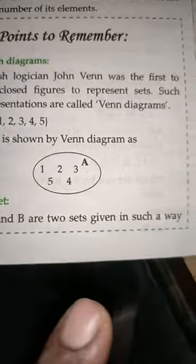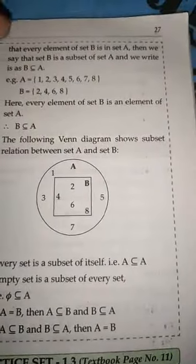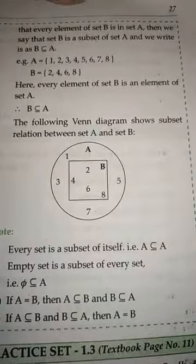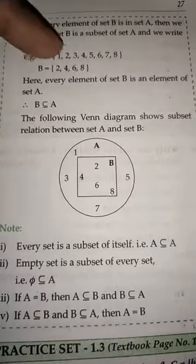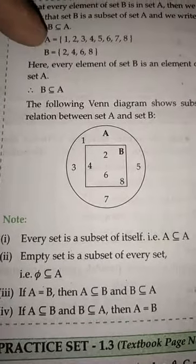Then subset. If A and B are two sets such that every element of B is in A, then we can say B is a subset of A. We write B subset of A, using a C sign symbol on the line to A.